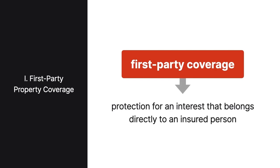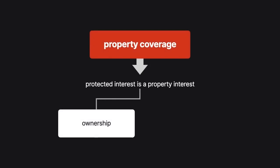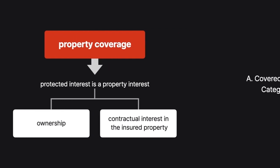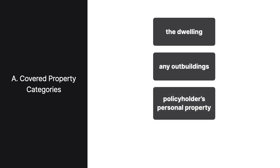First-party coverage means protection for an interest that belongs directly to an insured person. Property coverage means that the protected interest is a property interest, such as an ownership or contractual interest in the insured property. Homeowner's policies usually cover three categories of property—the dwelling, any outbuildings like garages or sheds, and the policyholder's personal property, frequently even if it isn't located at the dwelling.